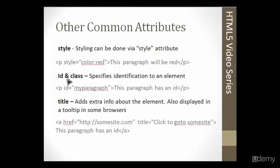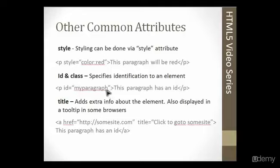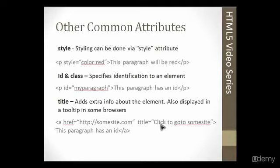Here we have the ID and class attributes, which allow us to select a certain element. These are usually used either for JavaScript or CSS if you have an external style sheet. You can connect an ID or a class to an element — here we have the P tag with the ID 'my paragraph,' so we could style this in a CSS style sheet by defining this ID and then the properties we want. The title attribute adds extra info about the element, and in most new browsers it will be displayed as a tooltip if you hover over it. For example, a link with the title 'click to go to some site' would show that tooltip on hover.